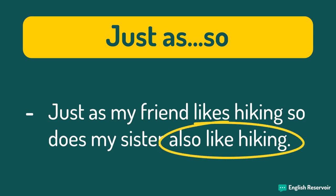Instead of adding 'also like hiking' to the sentence, we can use a type of ellipsis with 'just as, so.' Ellipsis means that you omit some words because they are already assumed — we use it to avoid making redundant phrases. We are using 'just as, so' as another way of saying 'my friend likes hiking and my sister also likes hiking.' It's just a more advanced and fluid way of saying it.